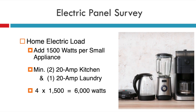My particular house has four of these 20-amp circuits in the kitchen and the laundry room. When you multiply those four circuits by the typical wattage draw for a small appliance, which is 1,500 watts, you end up in step number two, in this example, with 6,000 watts.